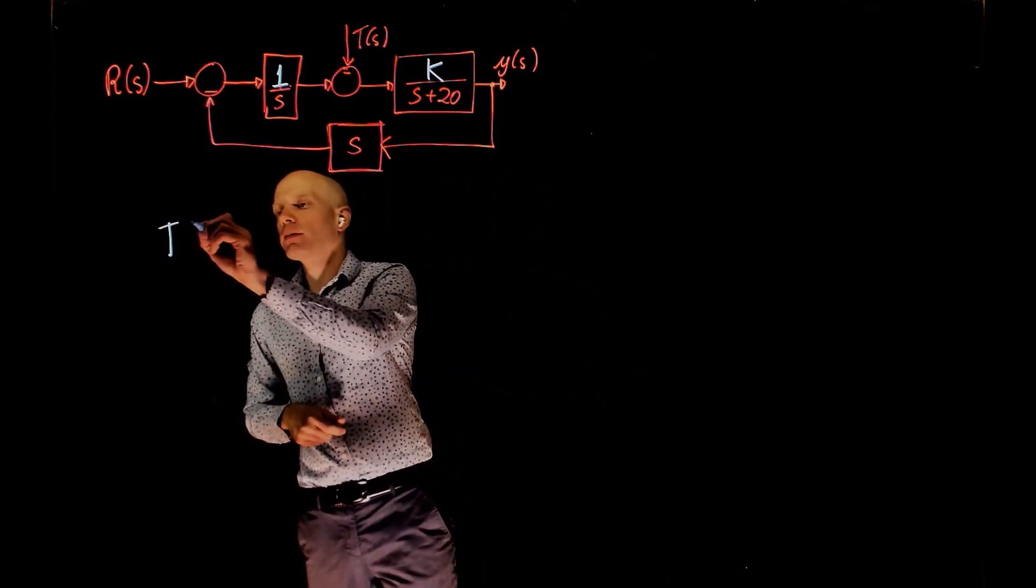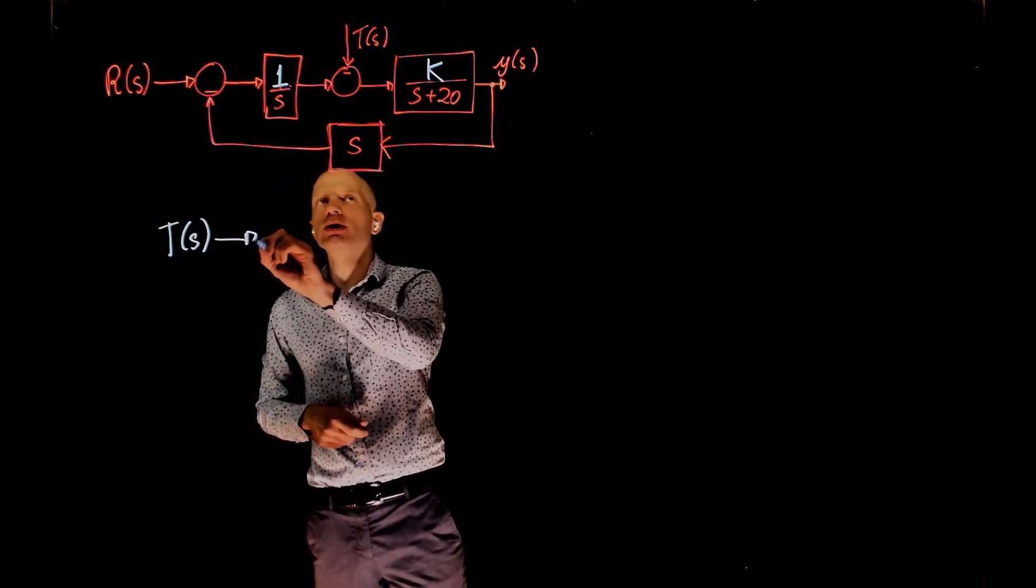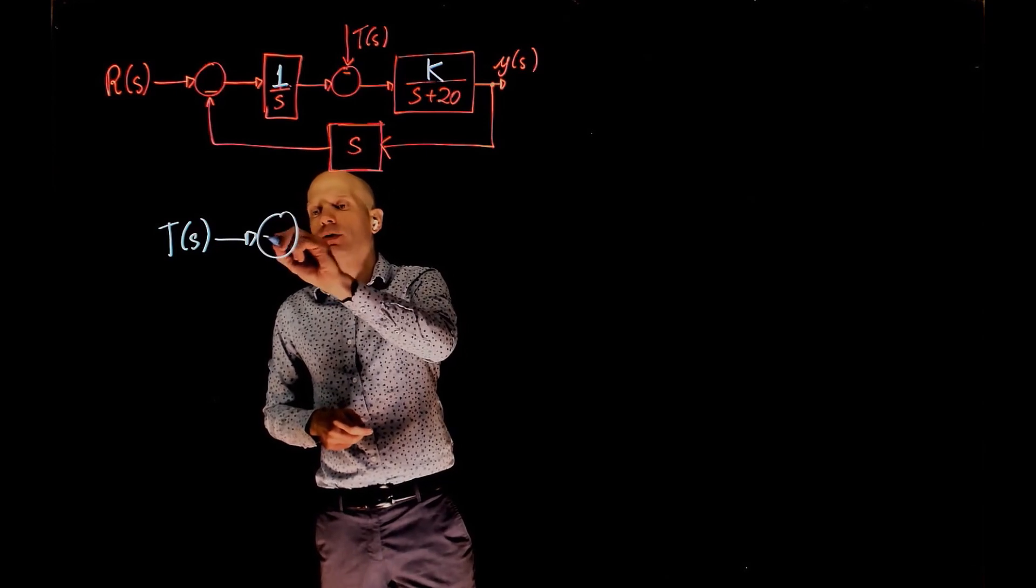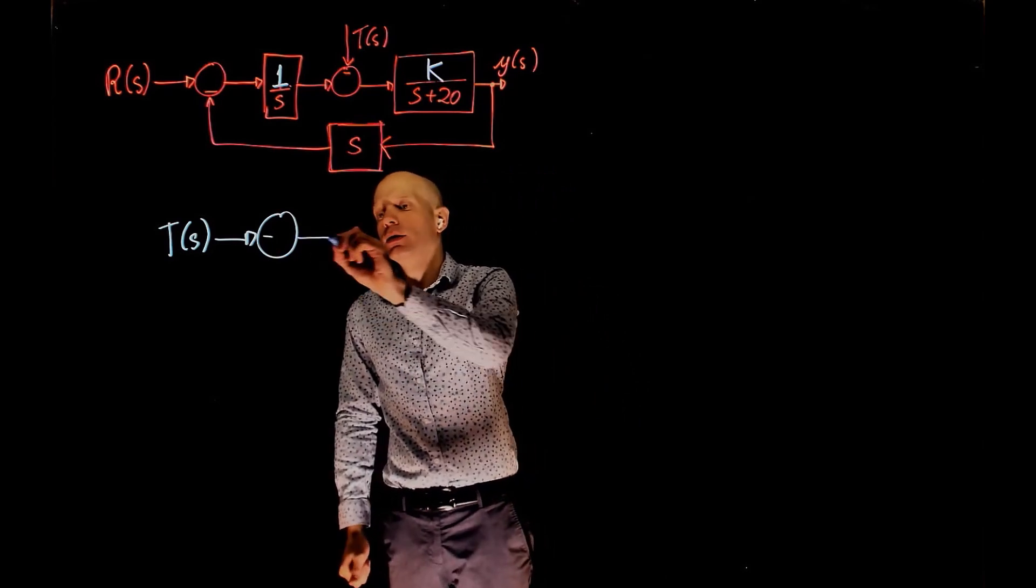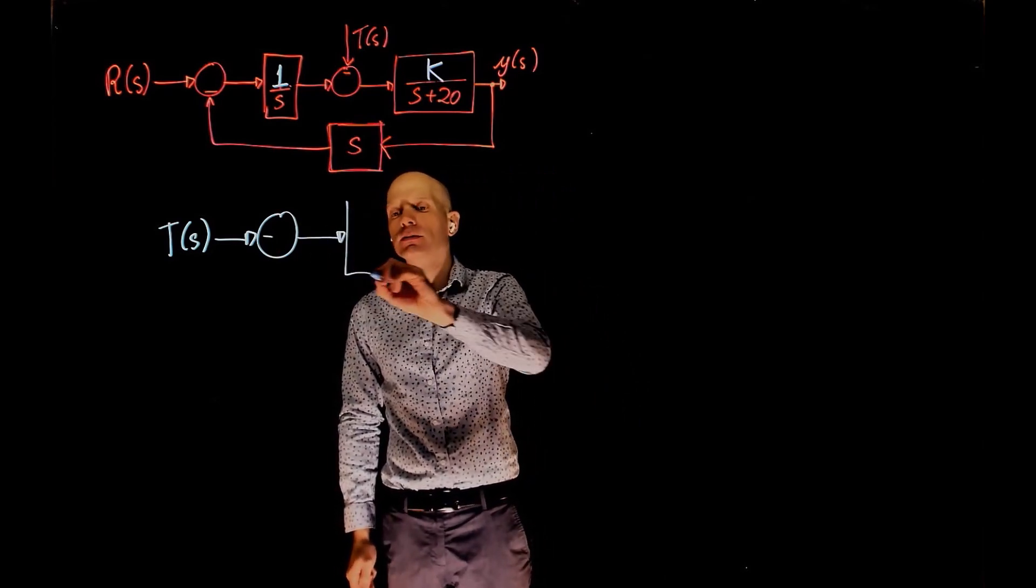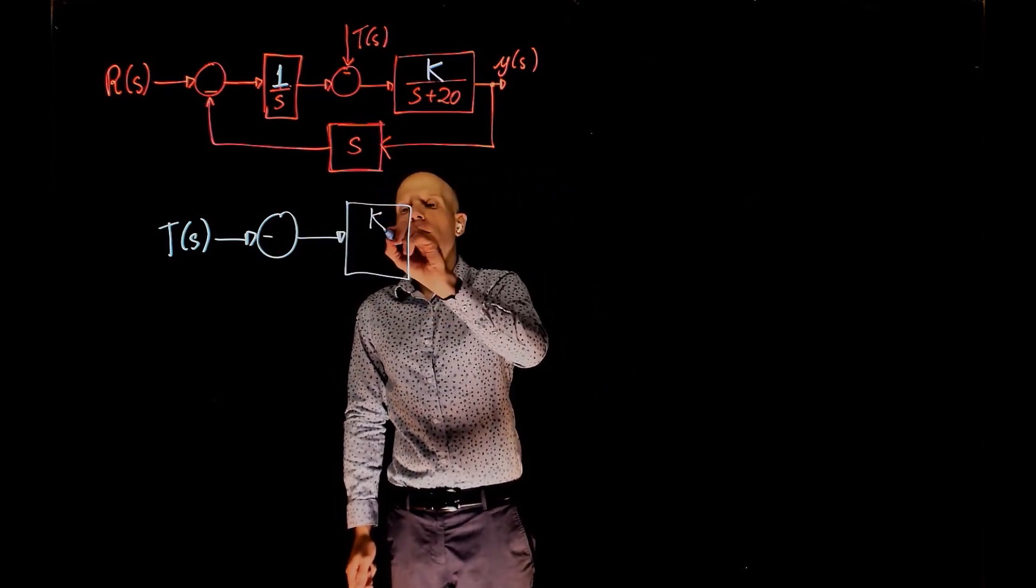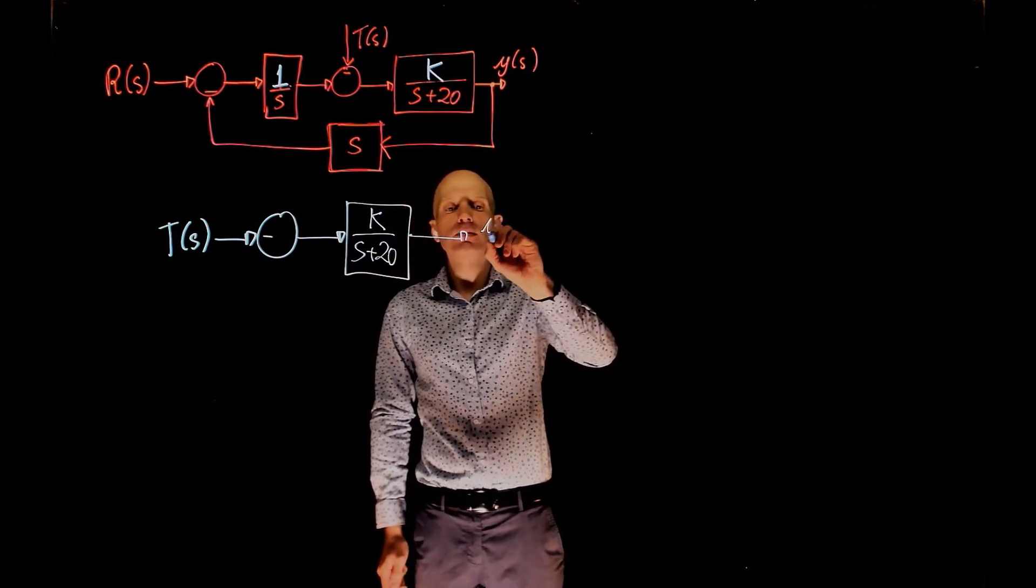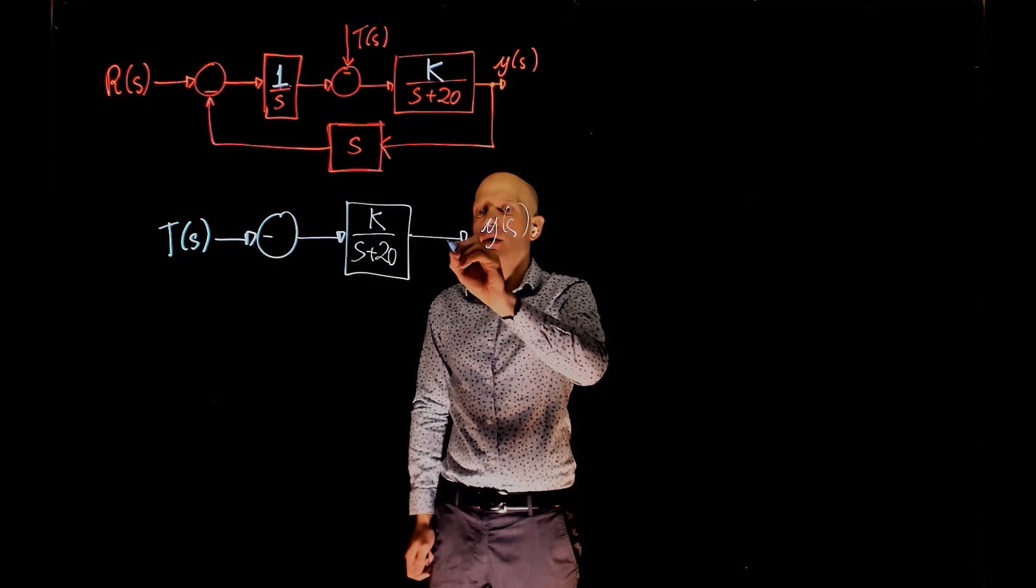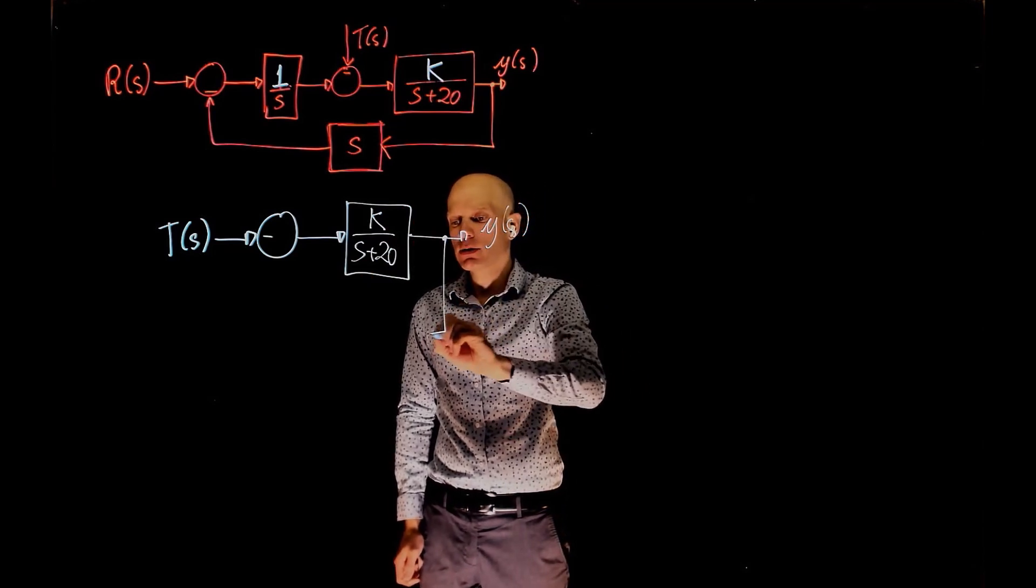Our input now becomes T(s), and we can rearrange this block diagram to account for that. T(s) is the input, this negative sign comes from there. Here we have our plant, k over s(s + 20). Here is the output, y(s). And now the feedback line has two functions, this s and 1 over s.